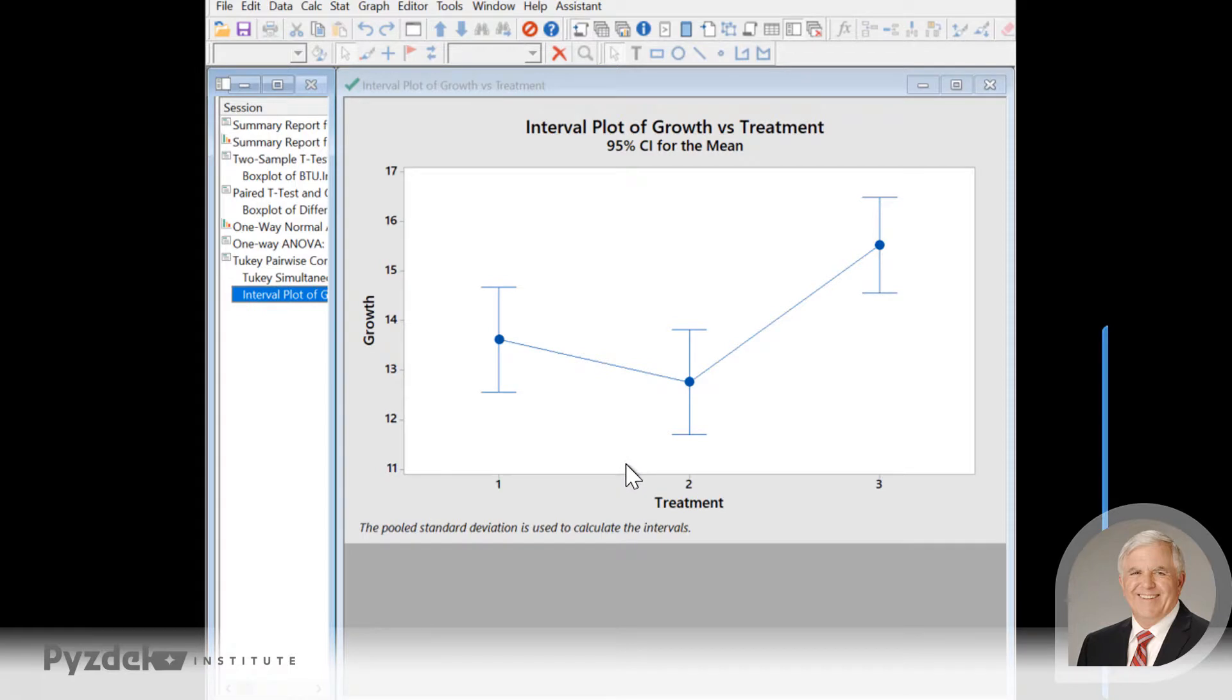We also get an interval plot. This shows us the average for each treatment level and a 95% confidence interval around that average. We can see graphically that treatments one and two are relatively close to one another, but treatment three is in a group all by itself. Minitab gives us information that would be rather challenging to get without statistics software.